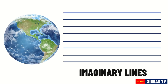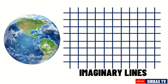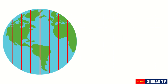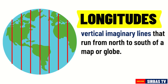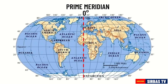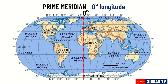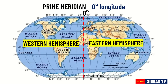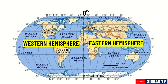Aside from the horizontal imaginary lines, we also have vertical imaginary lines. These vertical imaginary lines that run from north to south of a map or a globe are called longitudes. They extend from pole to pole on a globe. To easily visualize the longitudes, let us use this map. The starting point for measuring longitude is the prime meridian, which is located at zero degrees. It is referred to as zero degree longitude. The prime meridian divides the Earth into another pair of hemispheres: the Western Hemisphere and the Eastern Hemisphere. The Western Hemisphere extends from the prime meridian to 180 degrees going to the left.